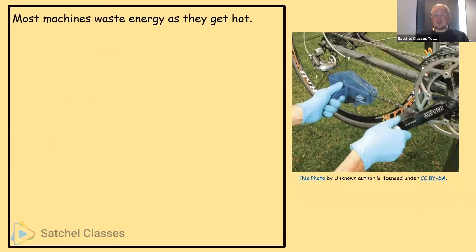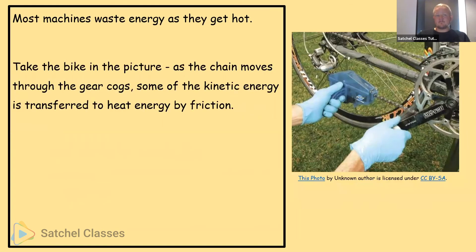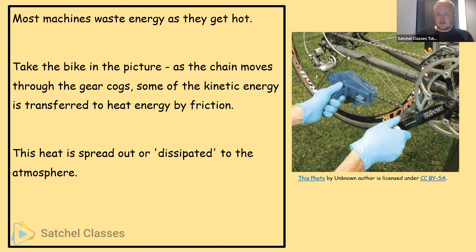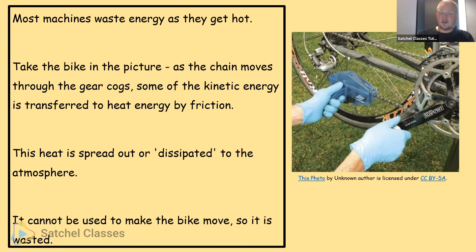Most machines also waste energy as they get hot. Take a bike — as the chain moves through the gear cogs, some of the kinetic energy of the chain is transferred to heat energy by friction between the chain and the cog as they rub against each other. This heat spreads from the gear cog to the atmosphere, meaning it can't be used to help push the bike along — in effect, it is wasted.